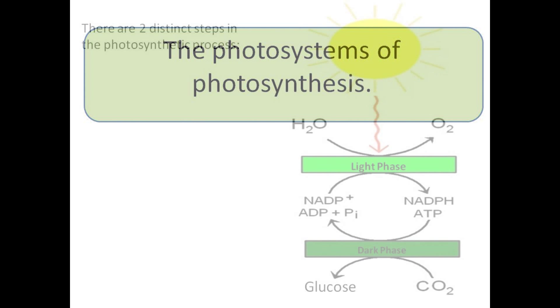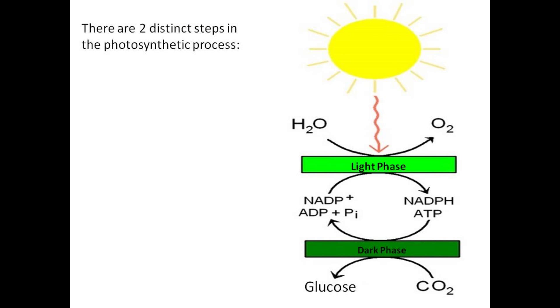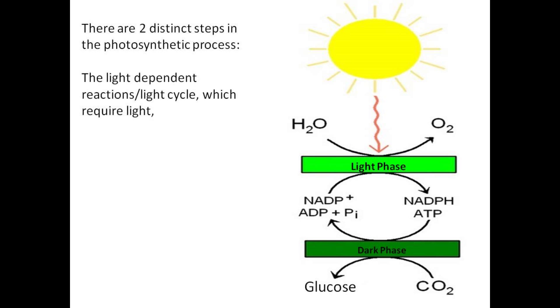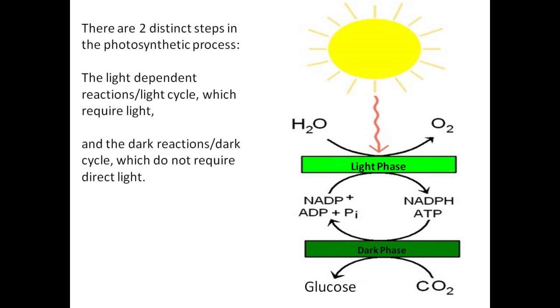There are two distinct steps in the photosynthetic process: the light-dependent reactions, or light cycle, which requires light; and the dark reactions, or dark cycle, which do not require direct light.